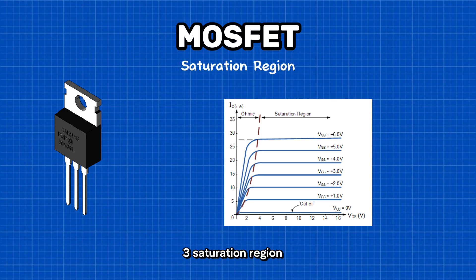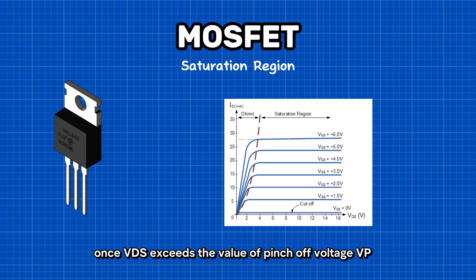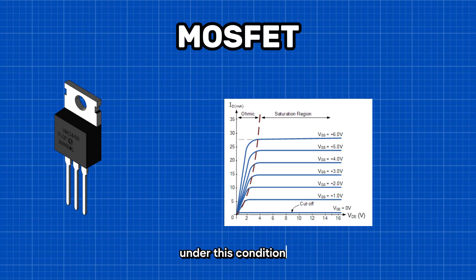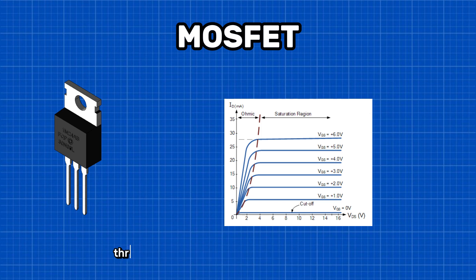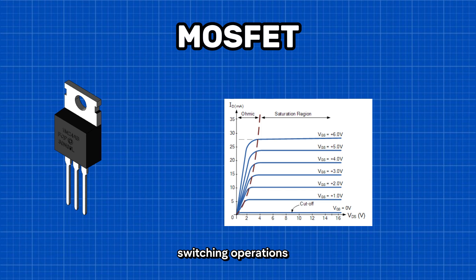Three: saturation region. In the saturation region, the MOSFETs have their IDS constant in spite of an increase in VDS, which occurs once VDS exceeds the value of pinch-off voltage VP. Under this condition, the device will act like a closed switch through which a saturated value of IDS flows. As a result, this operating region is chosen whenever MOSFETs are required to perform switching operations.